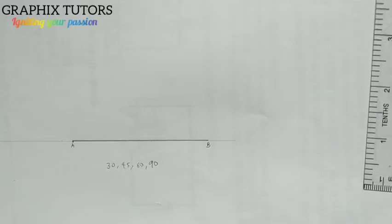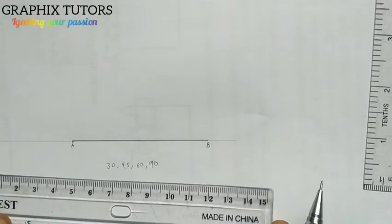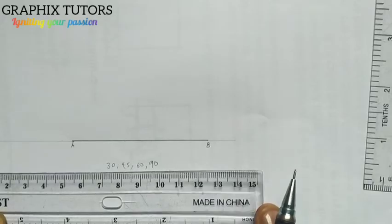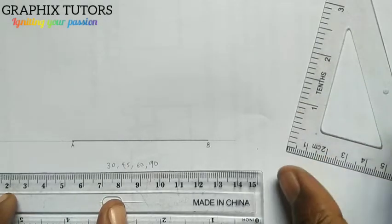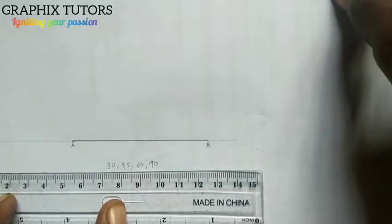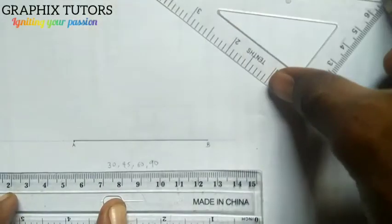So the next thing you do, since we are using our T-square and set square as basis, you take your T-square and place it. Now you take your 60 degree set square and place it at that point.